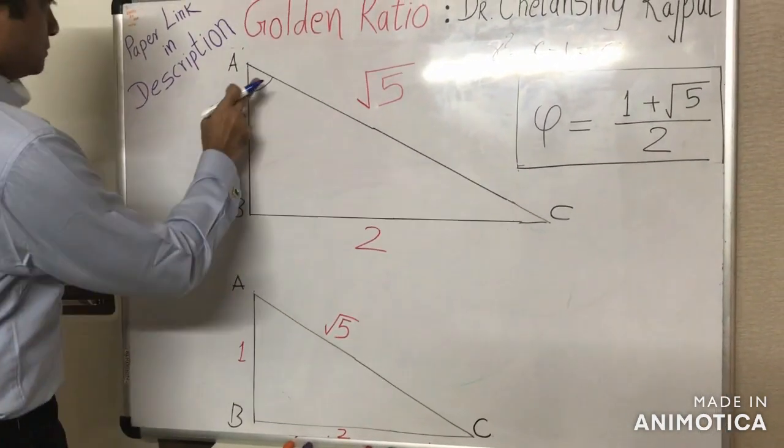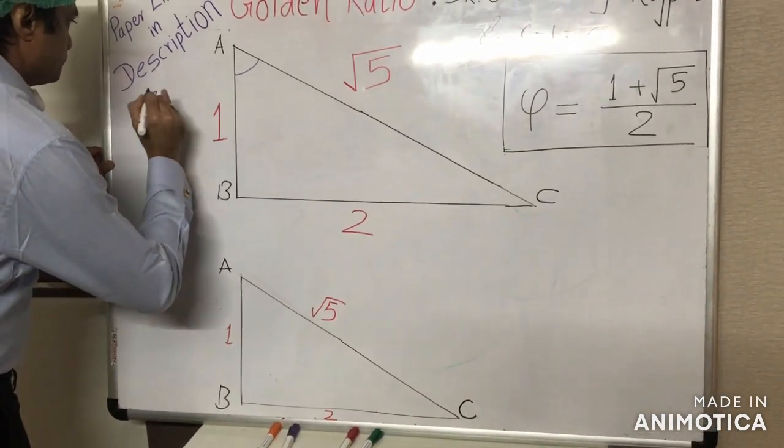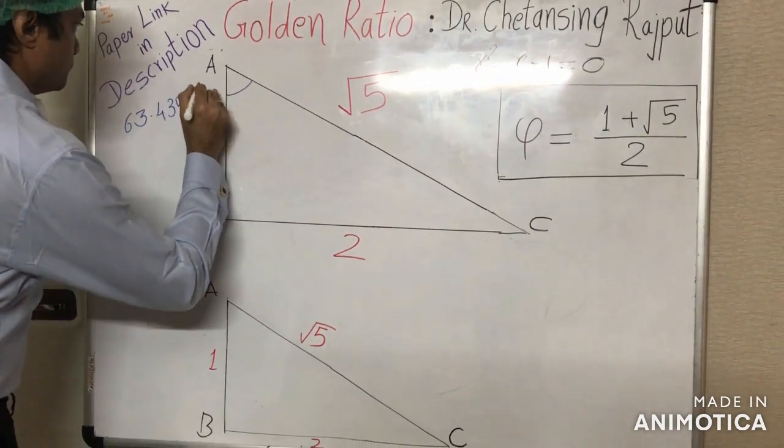Like this acute angle here against the longer cathetus, this angle measures 63.435 and so on in degrees.